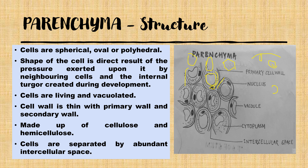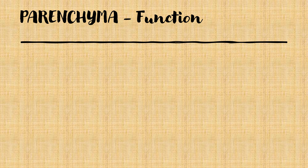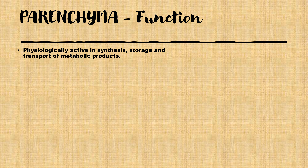The cell wall consists of two layers: a primary wall and a secondary wall, both made of cellulose or hemicellulose. In meristematic cells, the cell wall consists of only the primary wall. The arrangement of parenchyma cells shows lots of intercellular spaces, so the cells are loosely arranged. Parenchyma is physiologically active in synthesis, storage, and transport of metabolic products. It is the most important tissue for storage and is referred to as simple living storage tissue.